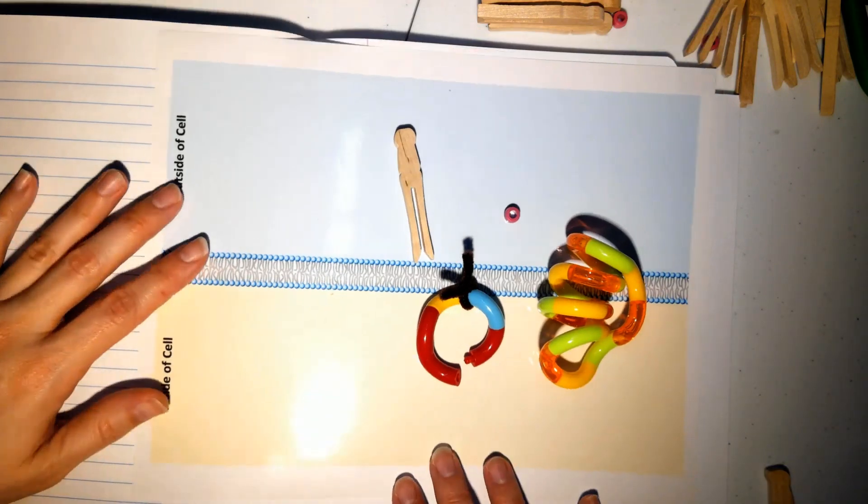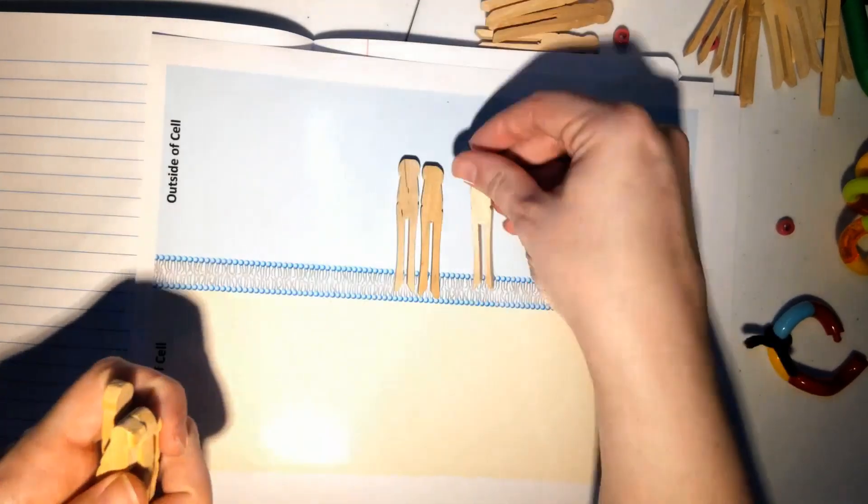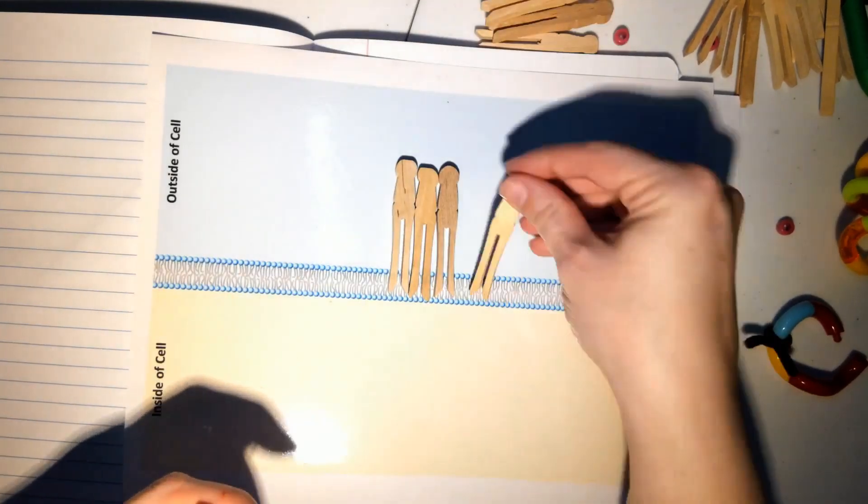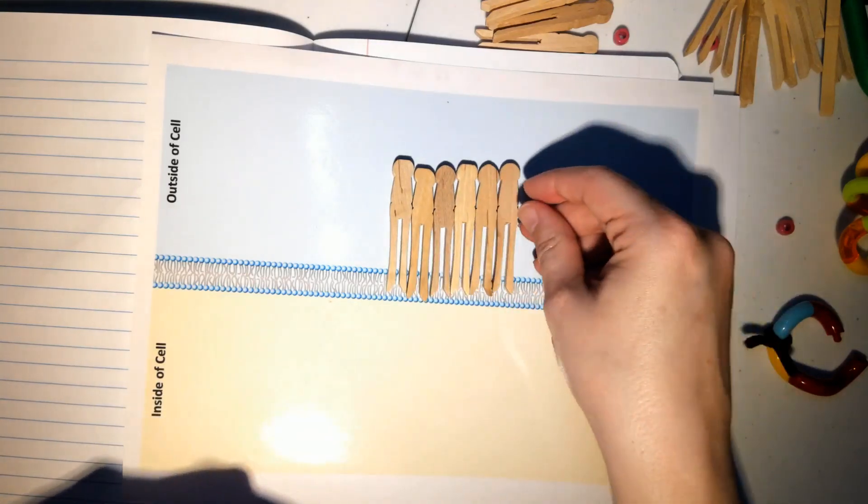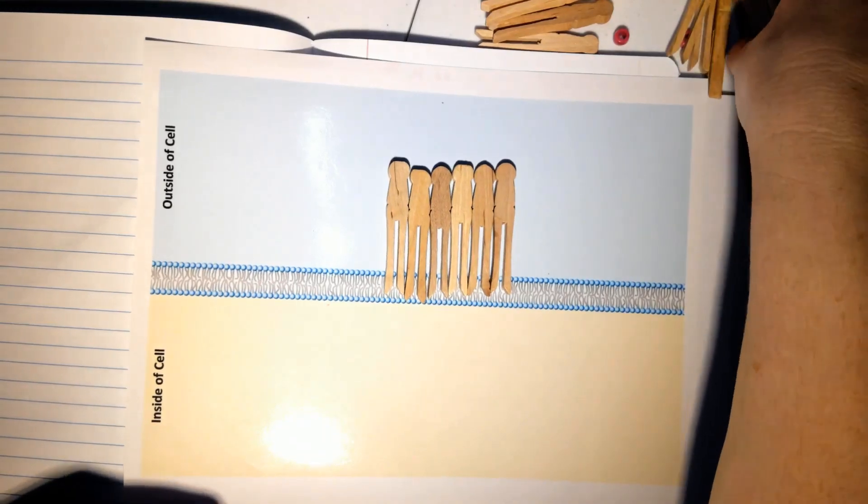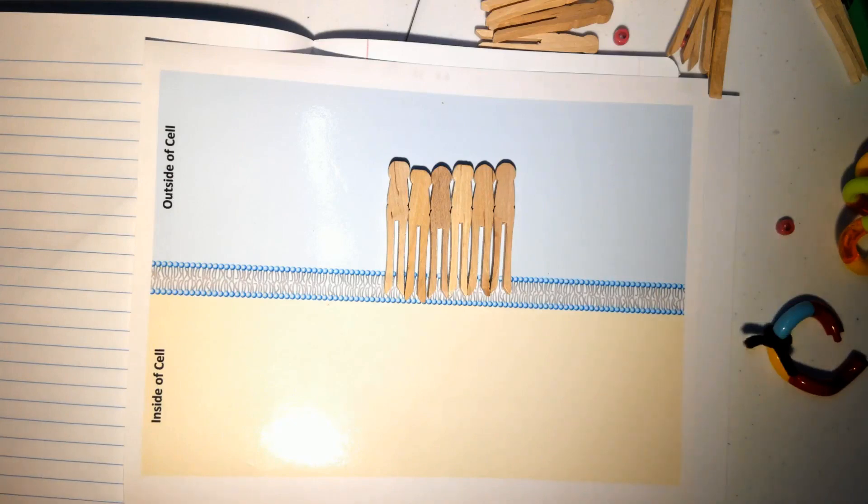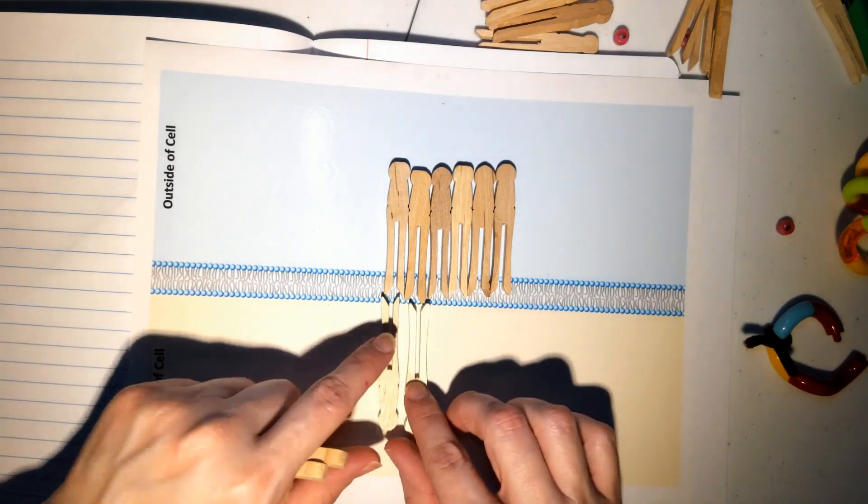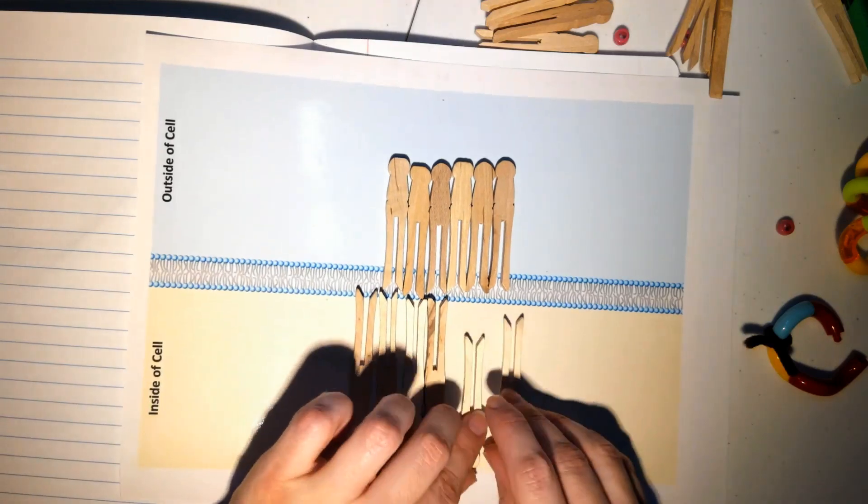All right, so these funky looking clothespin things in a cell membrane arrange themselves all together just like this. You'll notice that they look like they have a head and two tails. We're going to talk more about that in just a moment. Their little tails like to line up next to each other with their heads pointed outward. All right, I'm going to stop there.